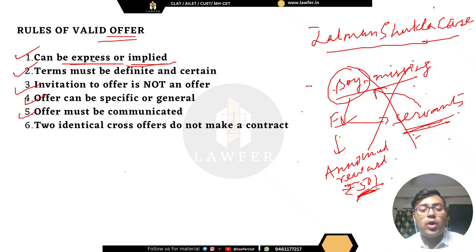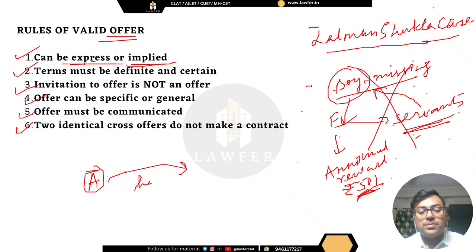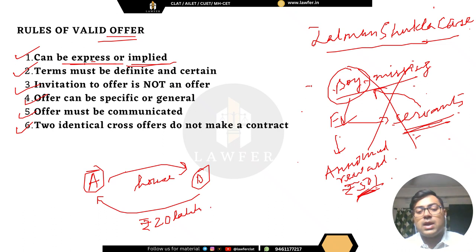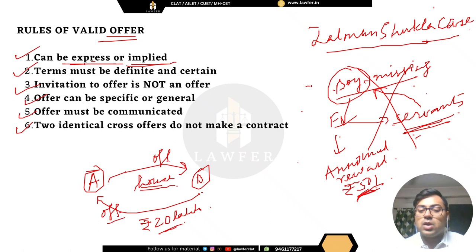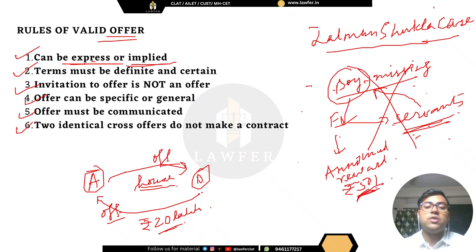Finally, two identical cross offers do not make a contract. Suppose A offers to sell his house to B, and B simultaneously offers to pay rupees 20 lakhs — but B mentions nothing about the house and A mentions nothing about the 20 lakhs. These are two separate offers. Two offers do not make a contract; there must be an acceptance for a contract to form.